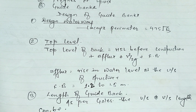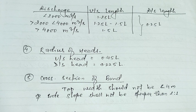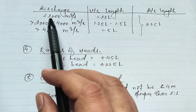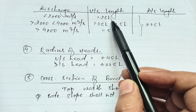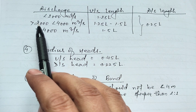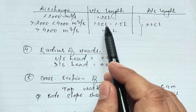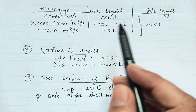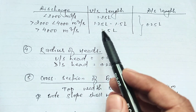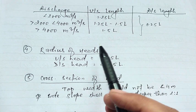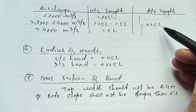In the third step, we calculate the length of the guide bank as per the tables. For discharge less than 2000 m³/s, upstream length is 1.25L. For discharge between 2000 and 4000 m³/s, upstream length varies from 1.25L to 1.5L. For discharge greater than 4000 m³/s, upstream length is 1.5L. The downstream length is always 0.25L regardless of discharge.